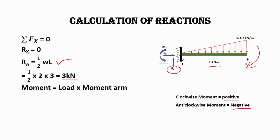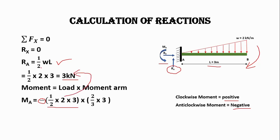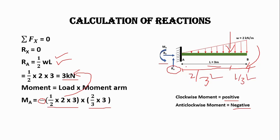Now let's calculate the moment acting on the beam using the formula: load × moment arm. The minus sign here is for the anti-clockwise moment, since we considered Ma in the anti-clockwise direction. The total load of 3 kN has already been calculated. For the moment arm, since our beam is 3 meters long and the load is triangular, the load acts from the centroid of the triangle. At the longer edge, the centroid is at 2/3 of the length, giving a moment arm of 2/3 × 3 meters. Therefore, Ma equals 6 kilonewton meters in the anti-clockwise direction.